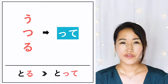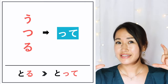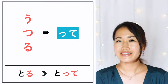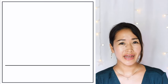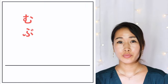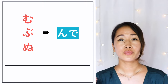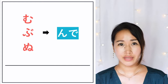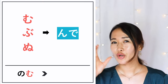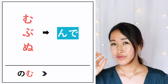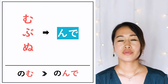So if you want to ask your friends 'please take a picture', you can say 'shashin totte'. Next, the verbs that end with MU, BU, NU change into NDE. For example, 'to drink' is 'nomu', and the TEFORM would be 'nonde'.